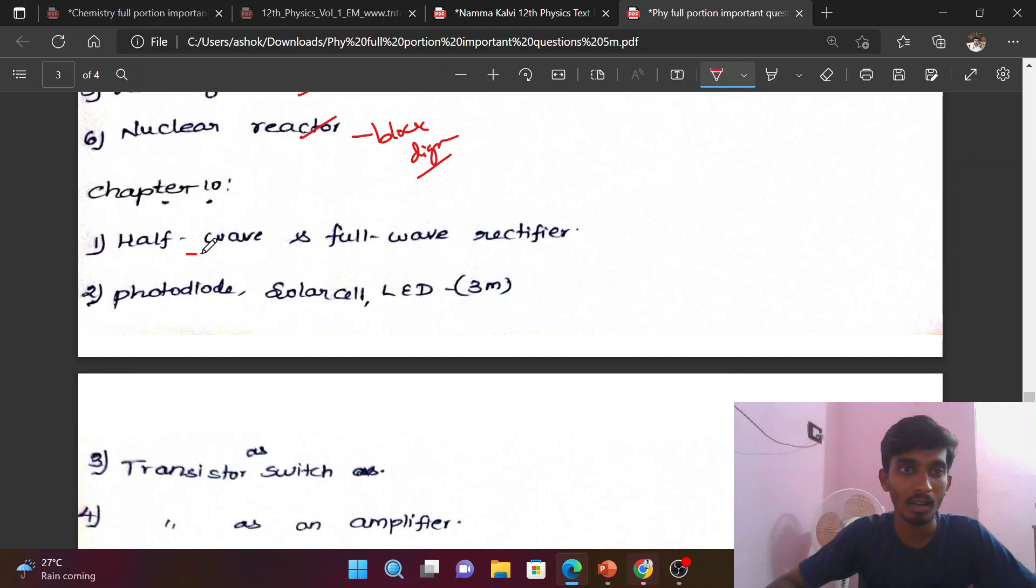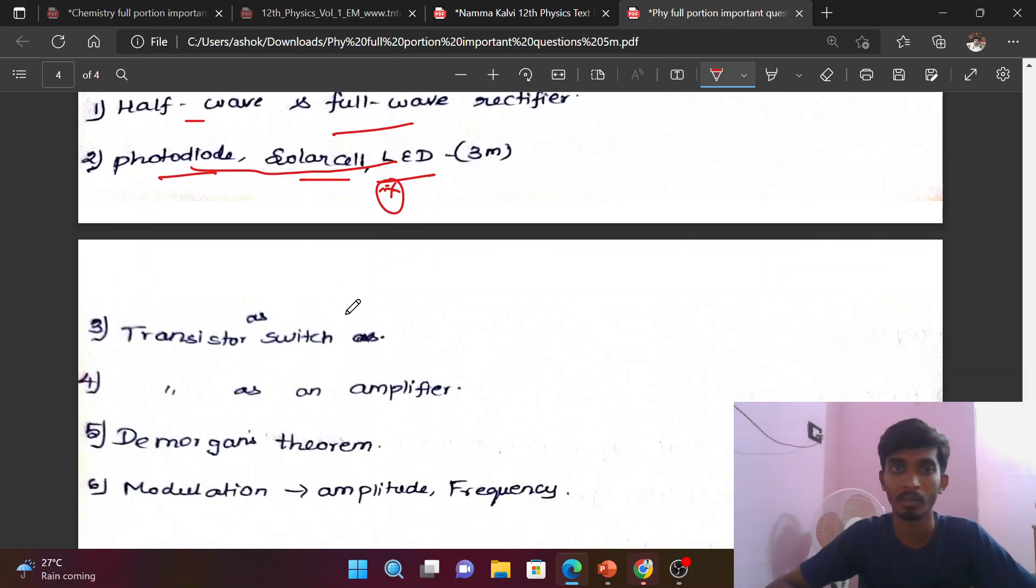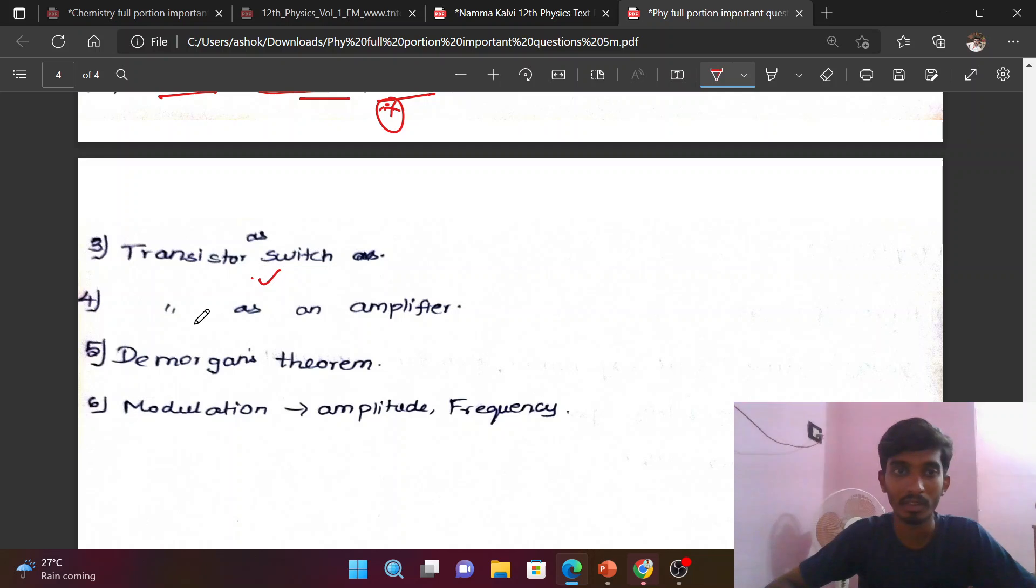Chapter 10: Half-wave and full-wave rectifier, photo diode, solar cell, LED - these are 3 marks each. Expect one question from these. Transistor as a switch, transistor as an amplifier - these are more important. De Morgan's theorem is rare for 3 marks but mostly 5 marks. Modulation, amplitude modulation, and frequency modulation.